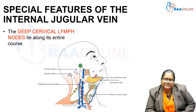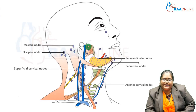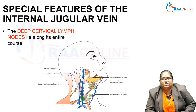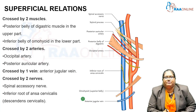The deep cervical lymph nodes of the neck lie along the entire course of the internal jugular vein. This makes the vein act as a useful guide for surgeons when removing nodes. Now we will look at the relations of the internal jugular vein.